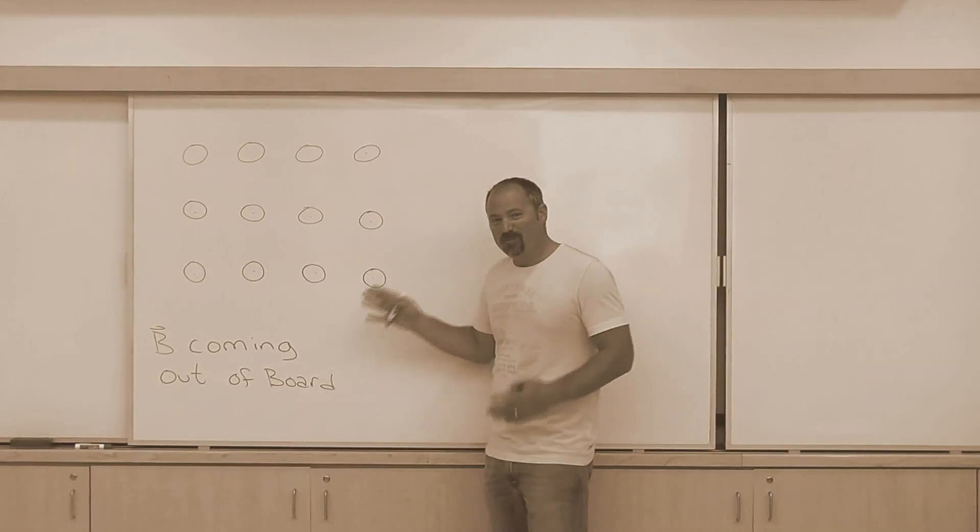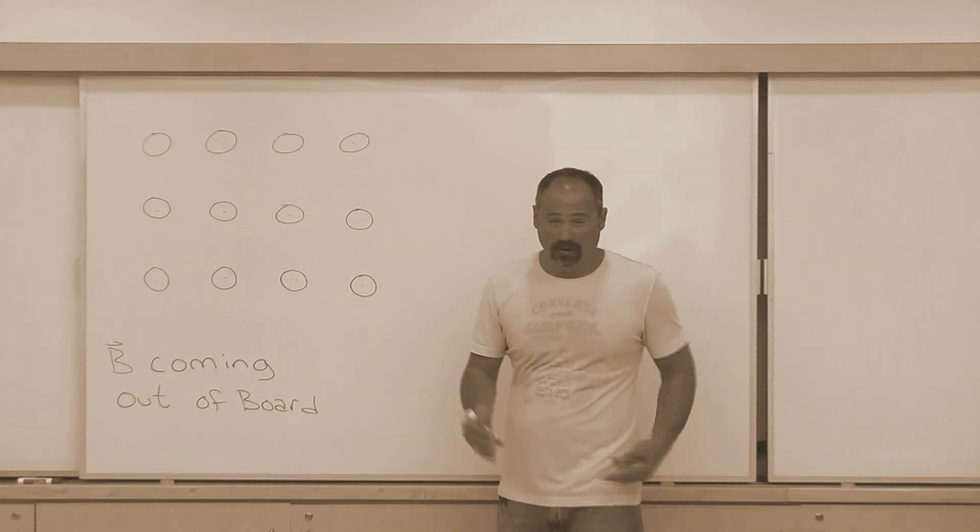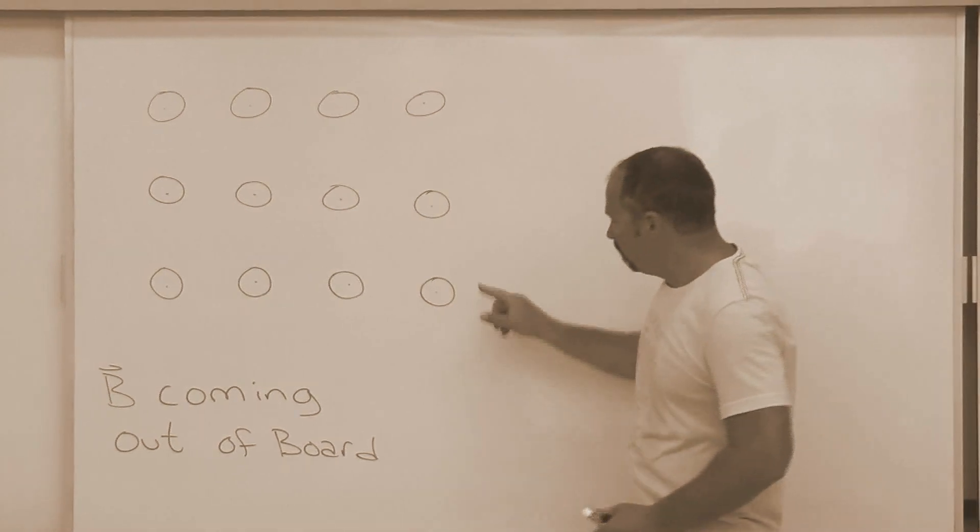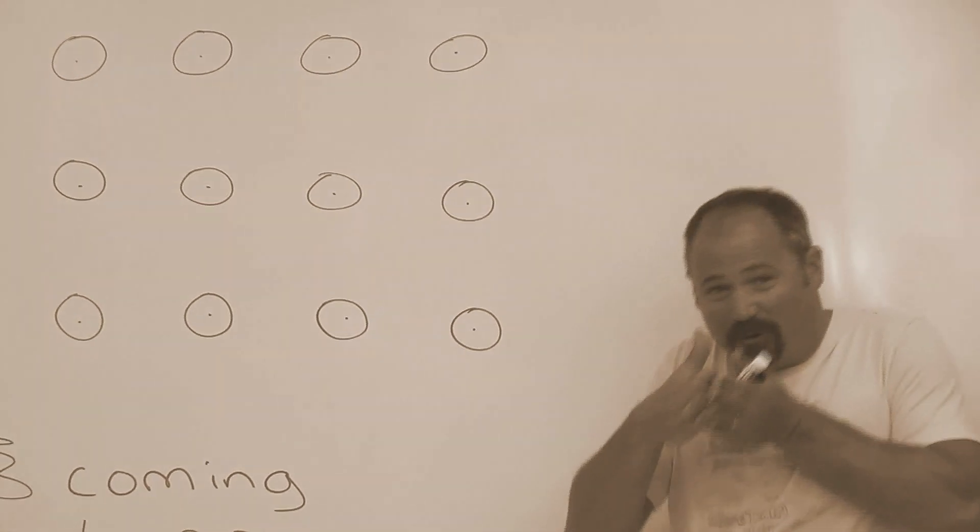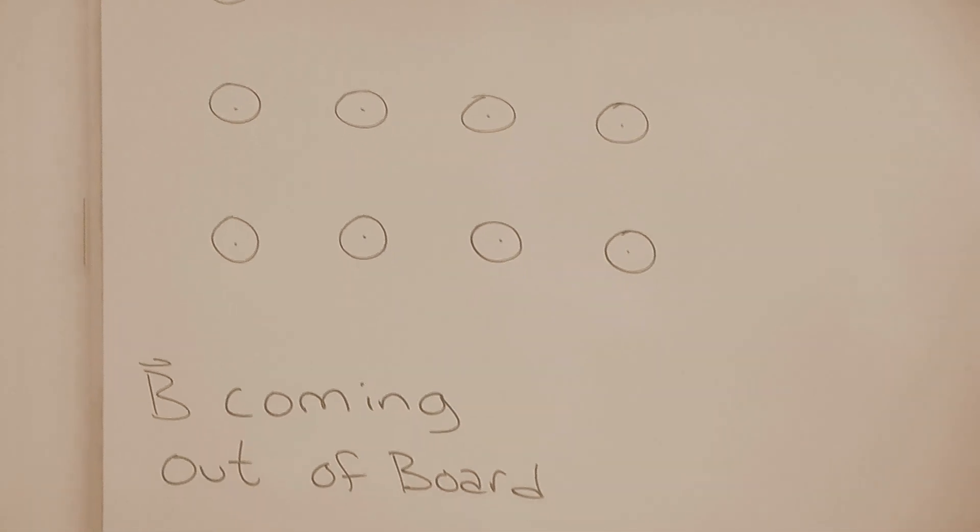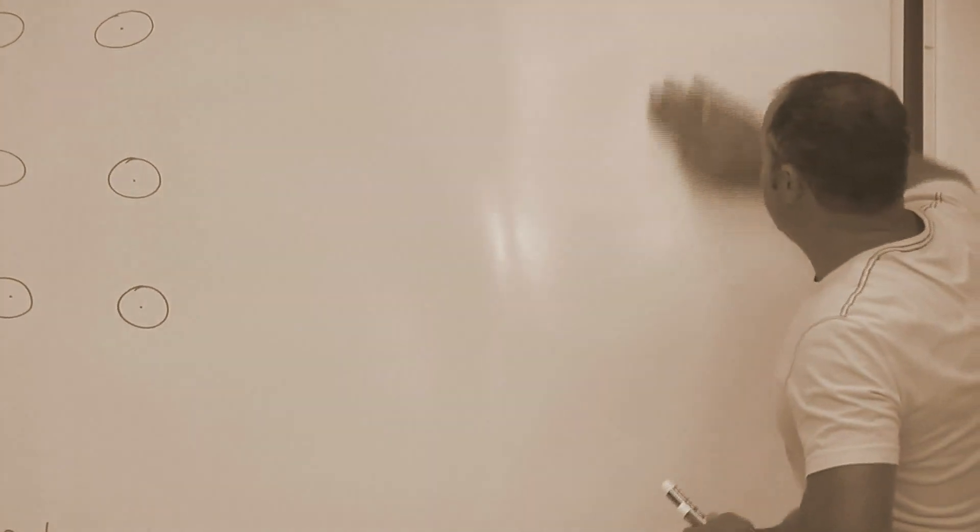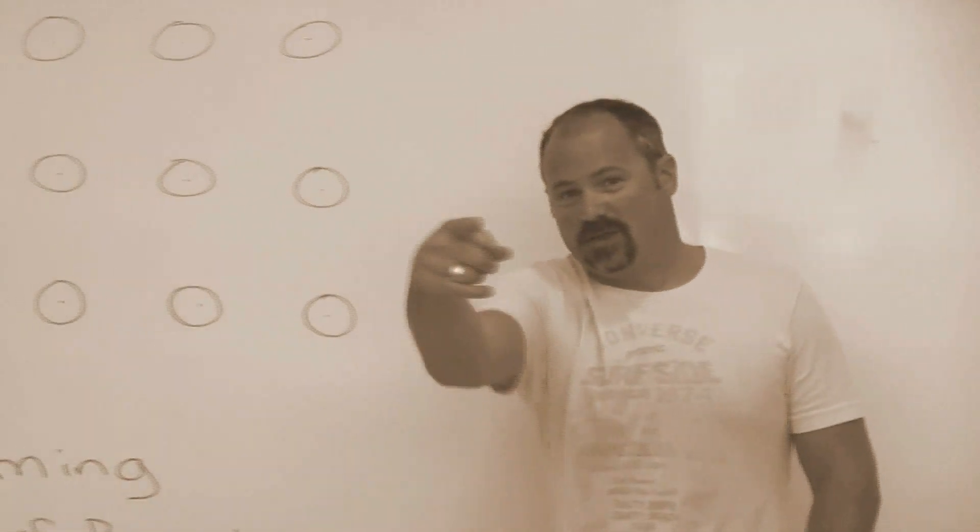So, here we have on the board a magnetic field coming out of the board. How do I know it's coming out of the board? Because I've drawn a circle and a dot, which signifies the tip of the arrow coming at you. Now, if it was going into the board, I would have drawn an X like this.